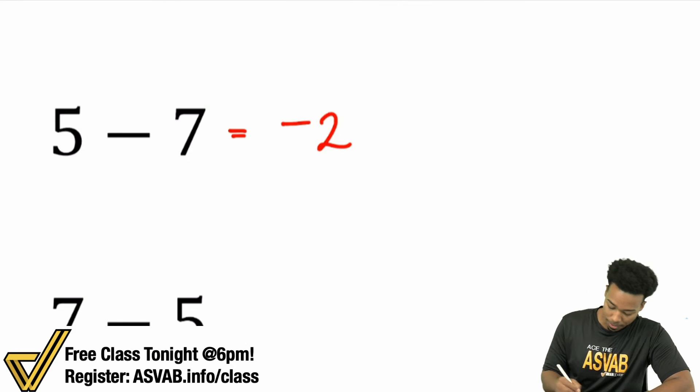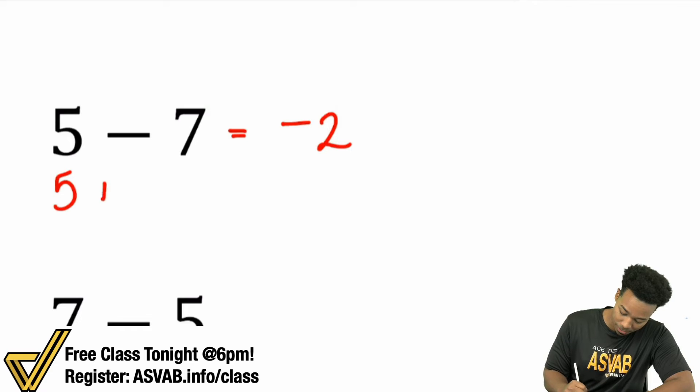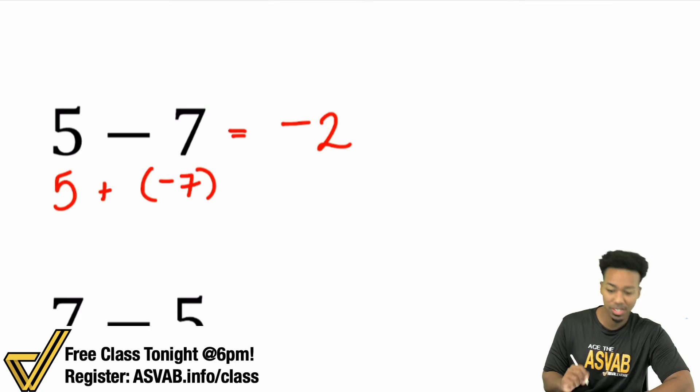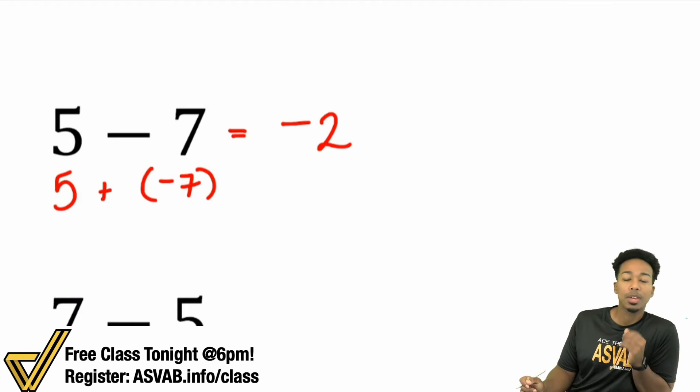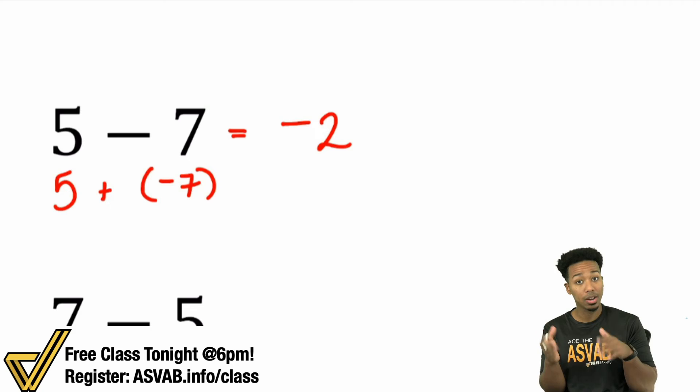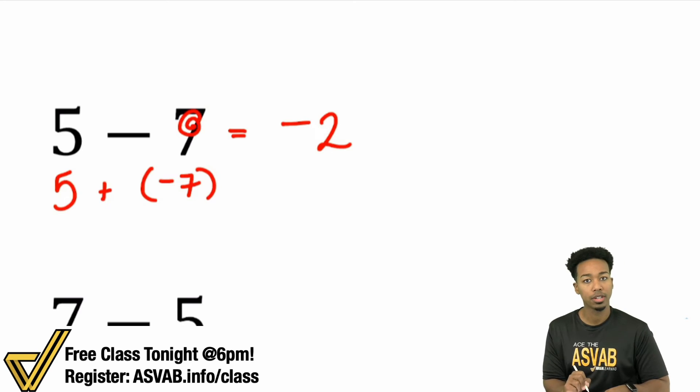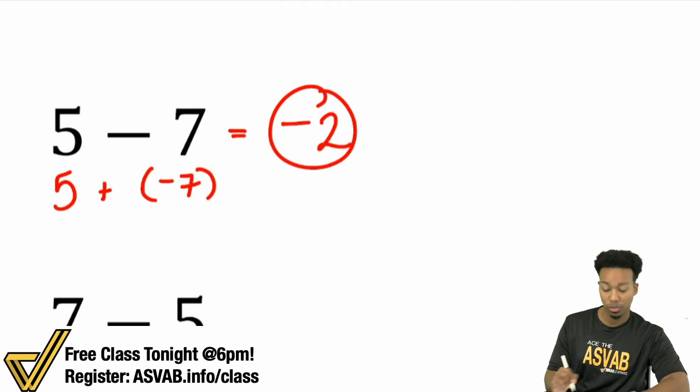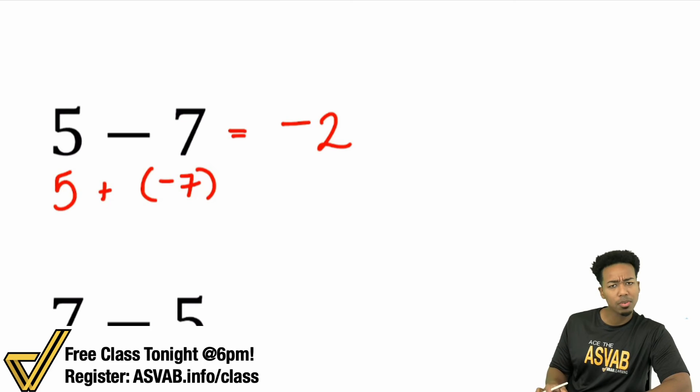So here's another way to think about it. 5 minus 7 is the same thing as saying 5 plus negative 7. They're the same idea. And remember, when you're adding opposite signs, just subtract them because you're canceling out what they have in common. If I'm going 5 to the left and 5 to the right, those will cancel. But you have the extra 2 over here. That's going to make it negative 2.